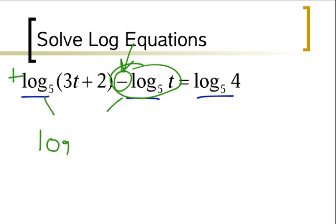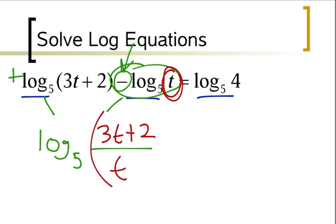That happens when I see subtraction. This first log is a positive 1, the second one is a negative log. So I want to write this side as 1 log, so log, and then the positive log stuff gets on top. It's log base 5 of a fraction bar. So I put 3t plus 2 on top, and then this t goes on the bottom.